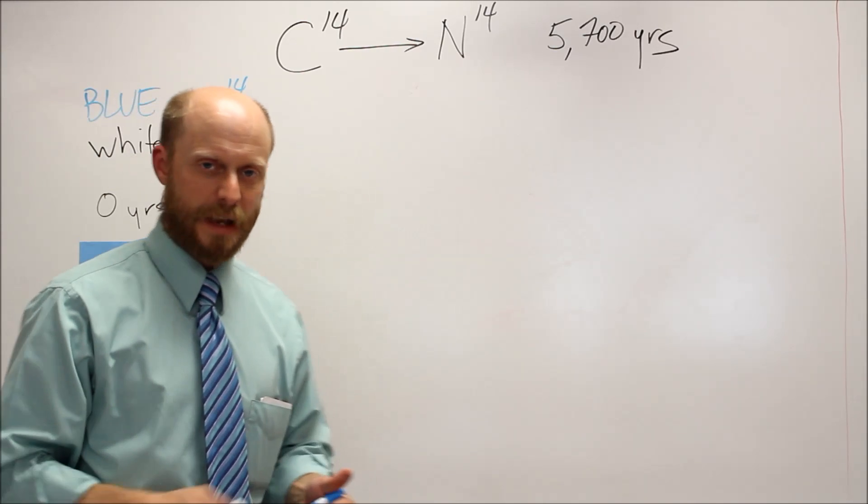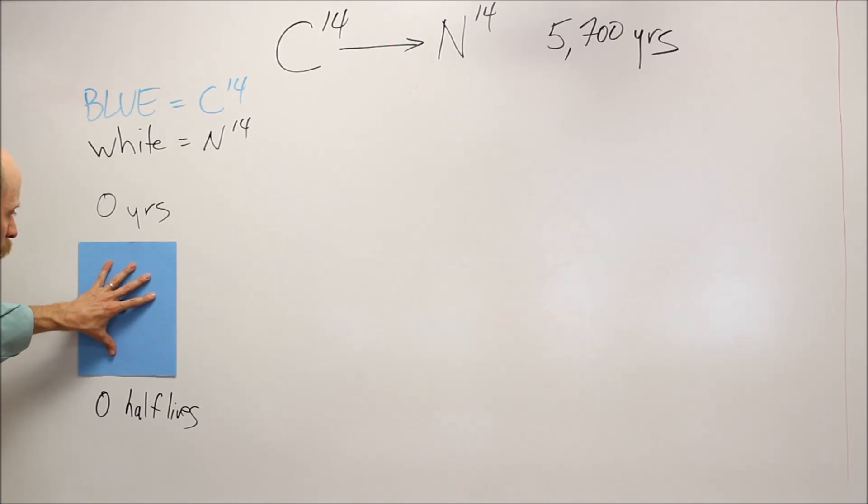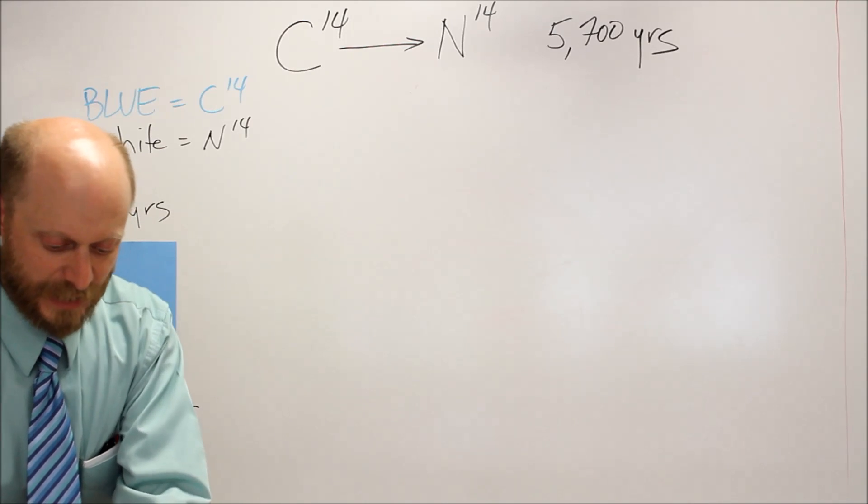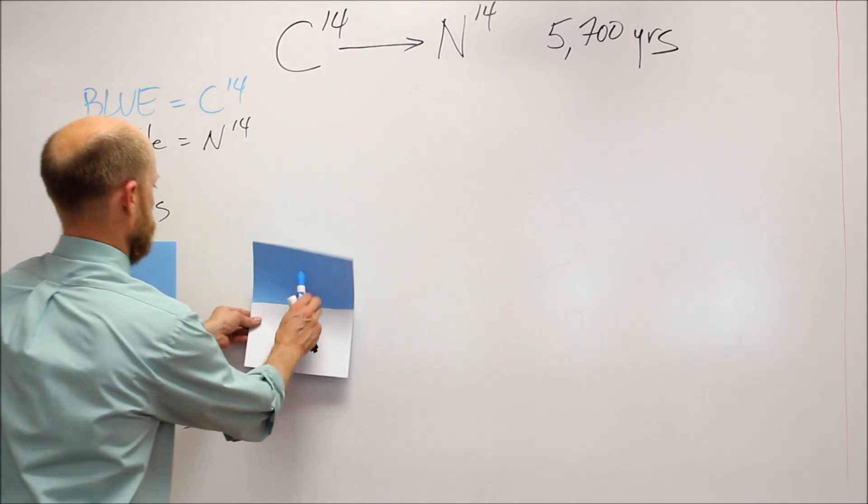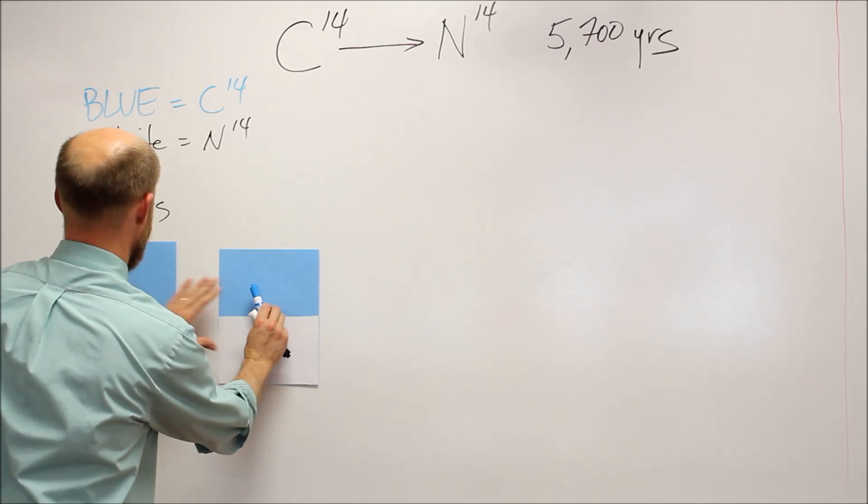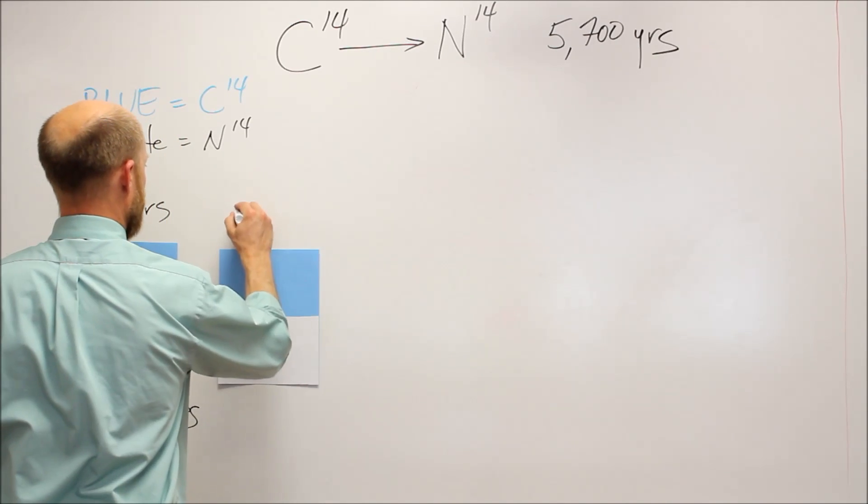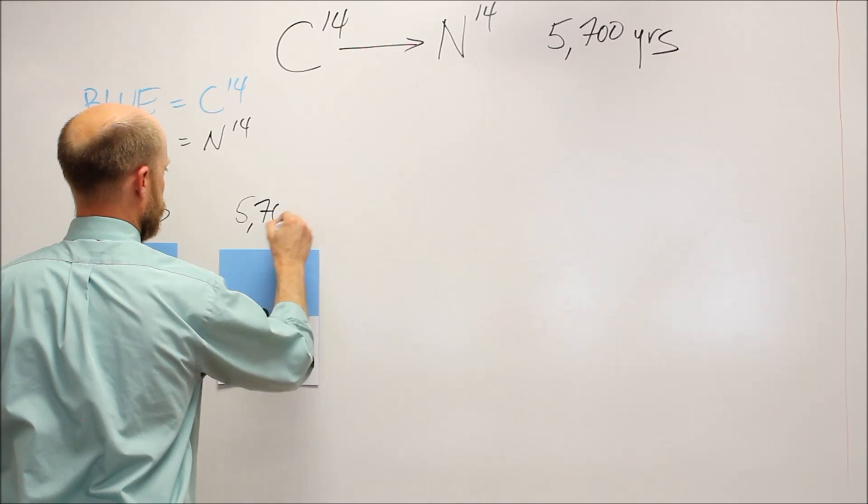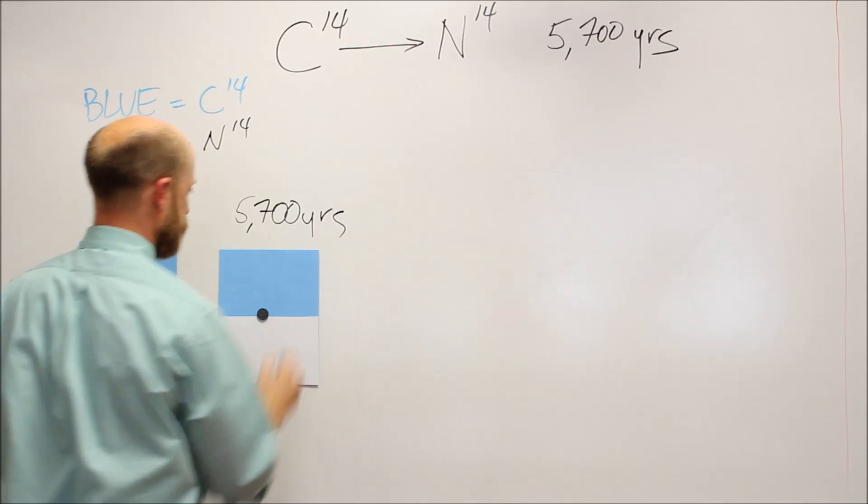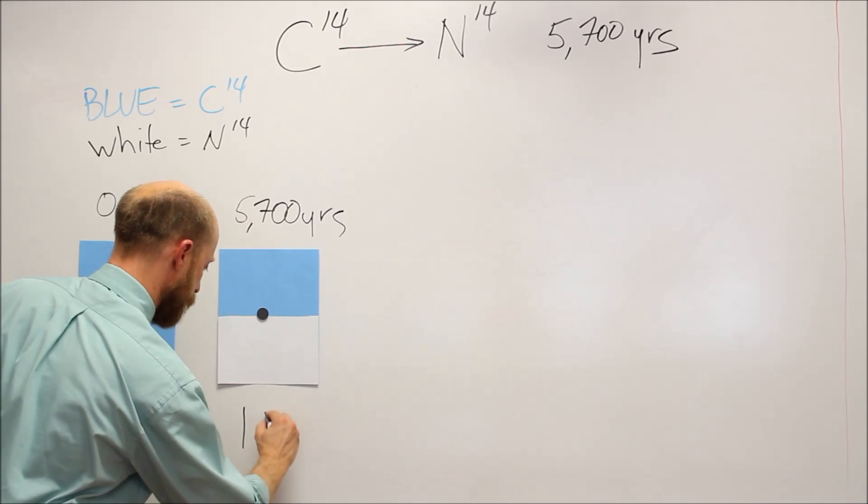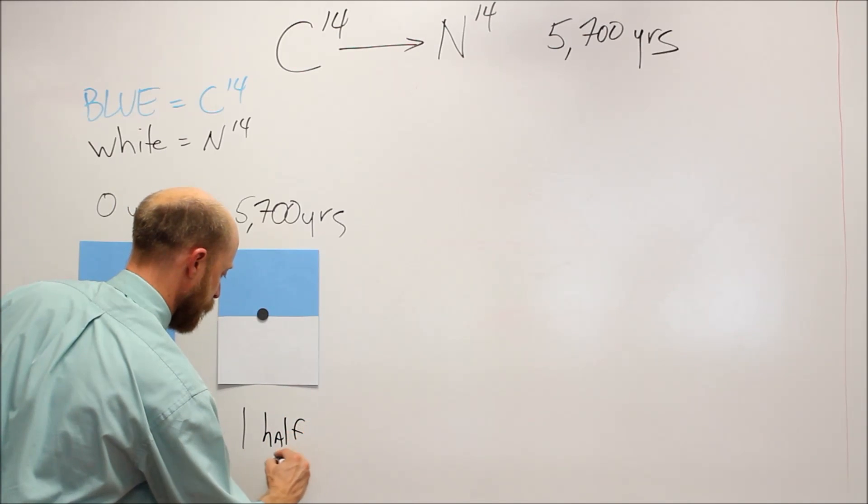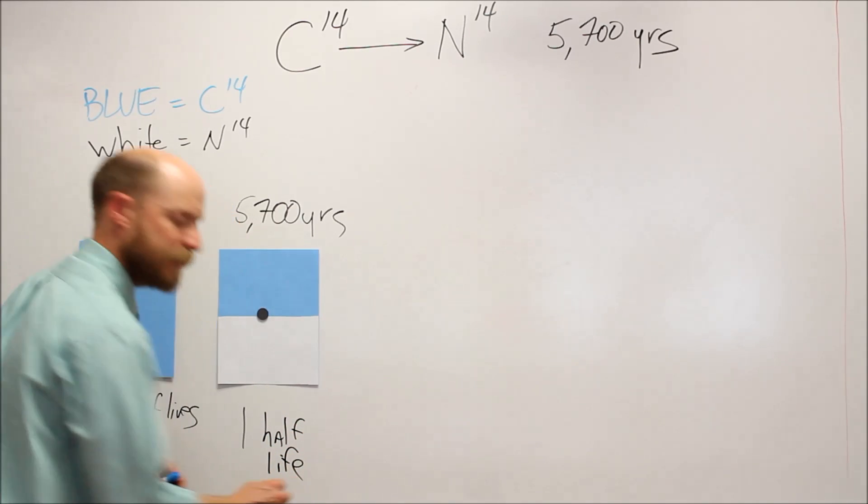After one half-life has gone by, what happens, half of the carbon-14, the blue, will decay and become nitrogen-14, and it will look like that. So, that's one half-life has gone by. That would be 5,700 years of time have passed, and one half-life.